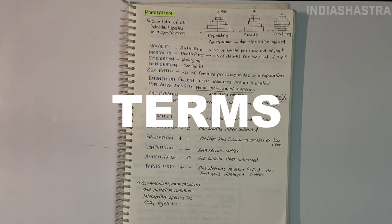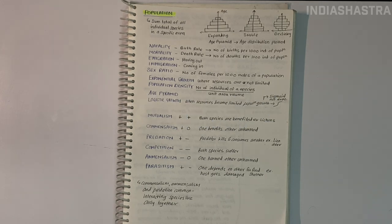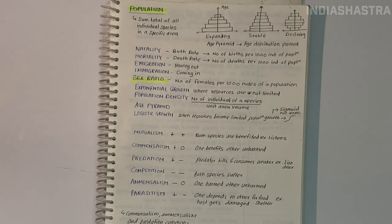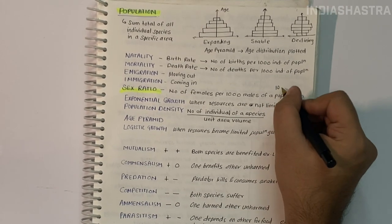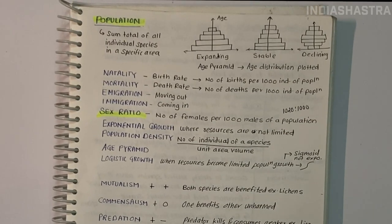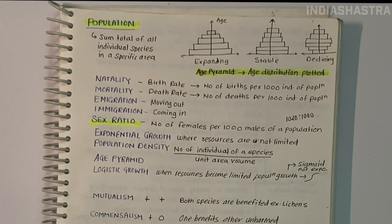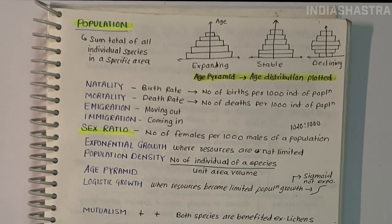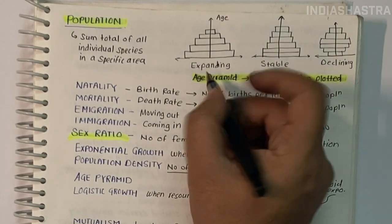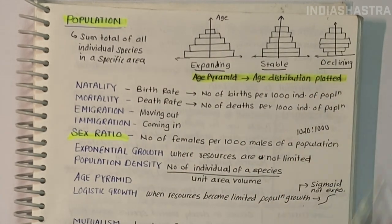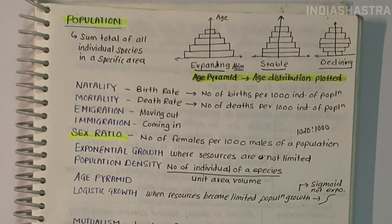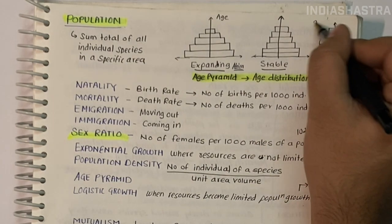Here are some terms related to populations. Sex ratio is the ratio of males to females — according to a recent economic survey, India has 1020 females per 1000 males. Age pyramid: when age distribution is plotted for a population, the result is an age pyramid whose shape reflects the growth status — whether the population is growing, stable, or declining. Most African countries have growing populations; Japan has a declining population pyramid.